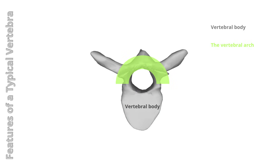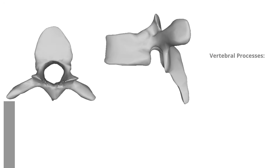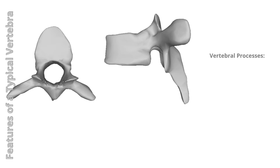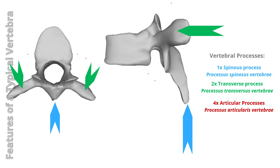The vertebral arch is located posterior to the body and is formed by two pedicles and two laminae. The pedicles have superior and inferior vertebral notches that form intervertebral foramina. The laminae connect the spinous processes to the transverse processes and form the posterolateral walls of the foramen. The vertebral processes include one spinous process, two transverse processes, and four articular processes. These processes serve as attachment points for ligaments and muscles and participate in joint formation.